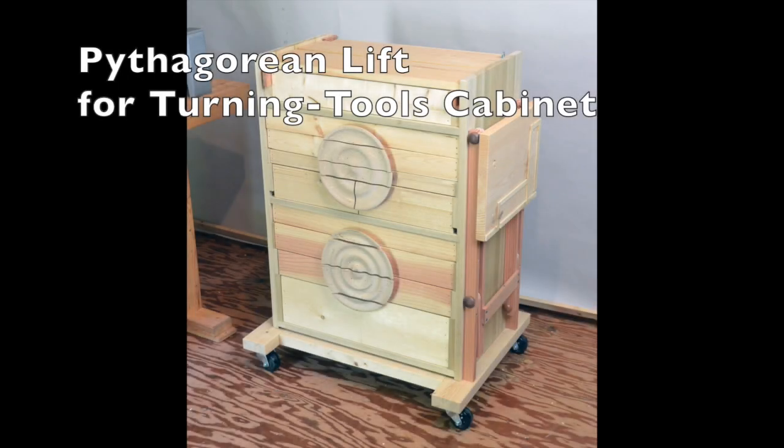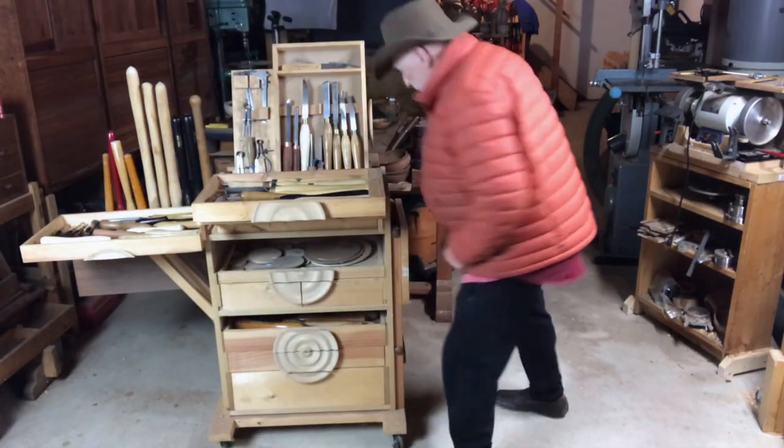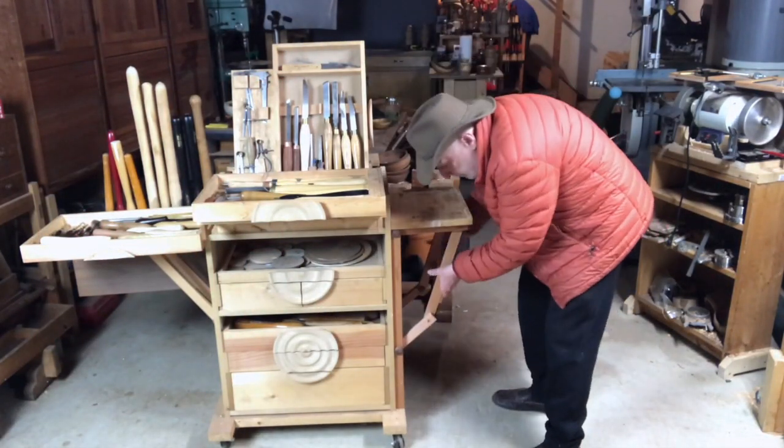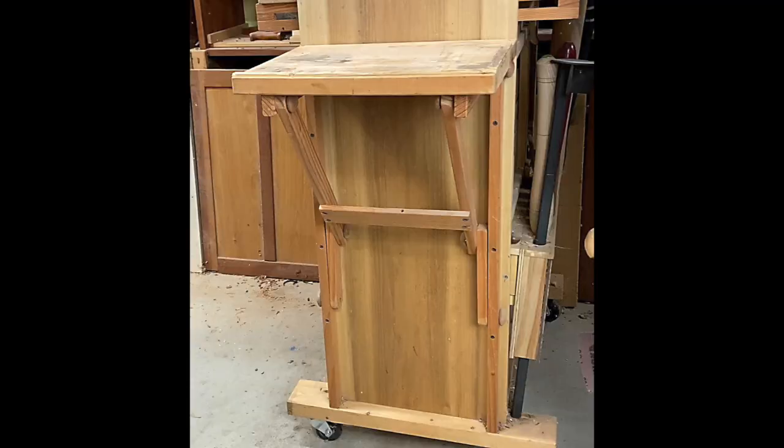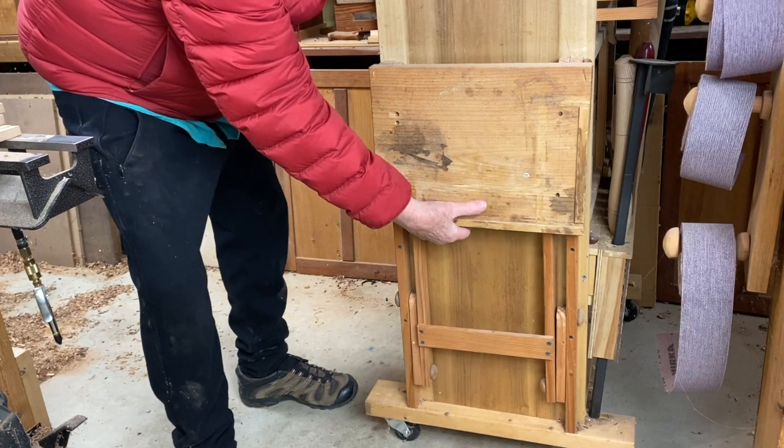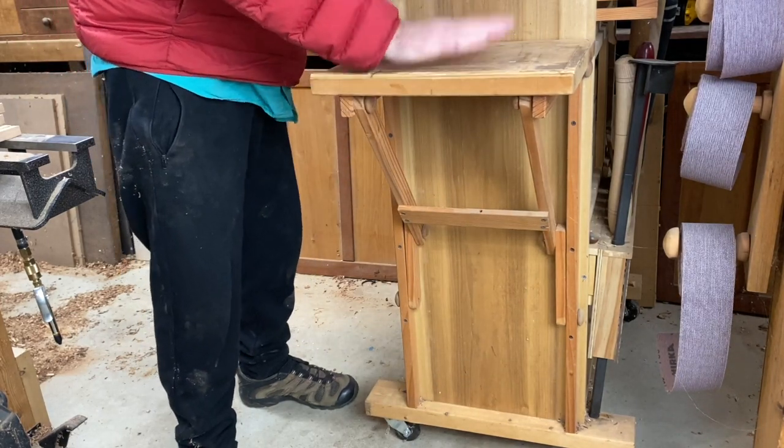My rolling turning tools cabinet uses four bar linkages to make sturdy lifts that extend from both sides. Here's the wing on the other side. This is what's called a Pythagorean lift. It's easy to fold down and to lift up. It locks in place and it's very sturdy.